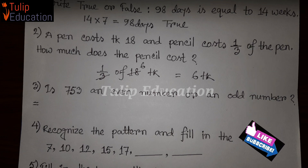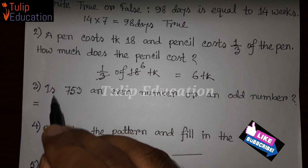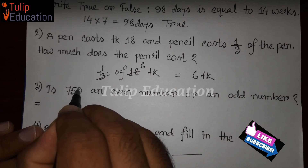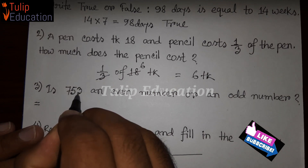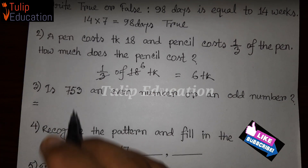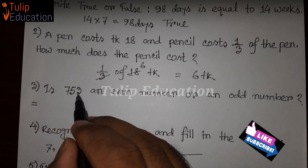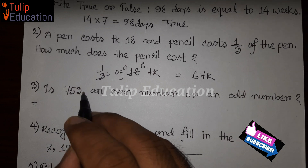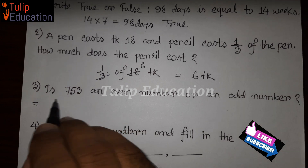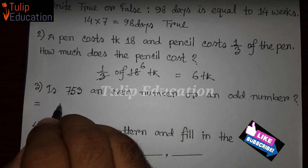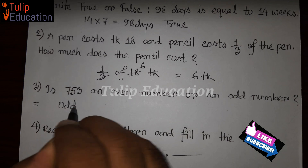Question number 3: Is 753 an even number or an odd number? To know whether a number is even or odd, we check the unit position. The unit position of 753 is 3. If the unit position is 1, 3, 5, 7, or 9, then the number is an odd number. So the answer is odd.